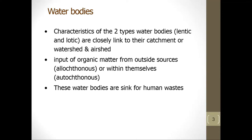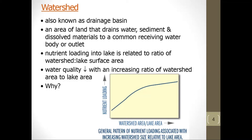These water bodies are sinks for human waste. The watershed, also called the drainage basin, is all of the land and water areas that drain towards a particular river or lake. A watershed is defined in terms of the selected lake or river, and there can be sub-watersheds within a watershed. For example, a tributary to a lake has its own watershed, which is part of the larger total drainage area to the lake.